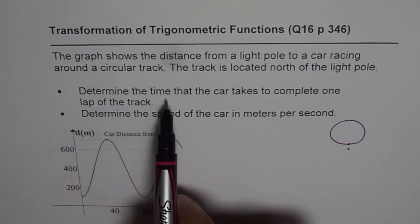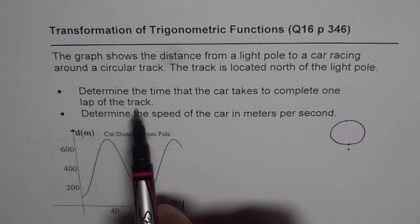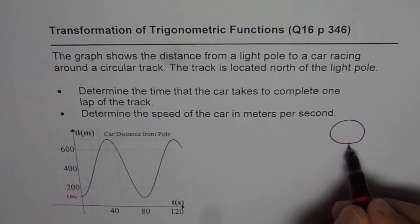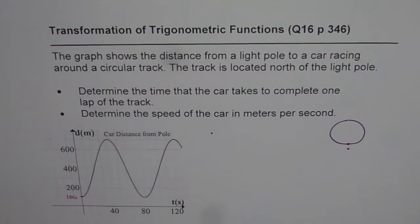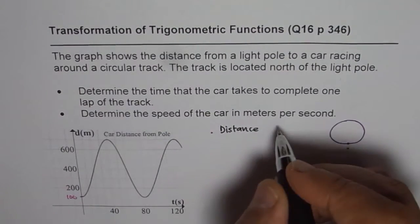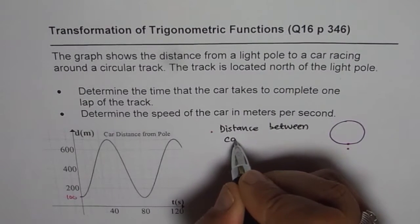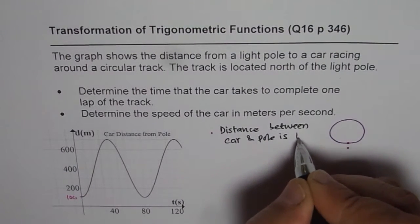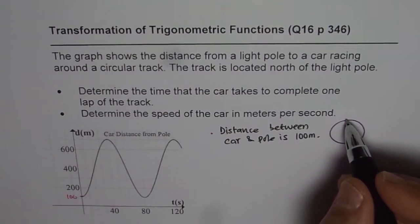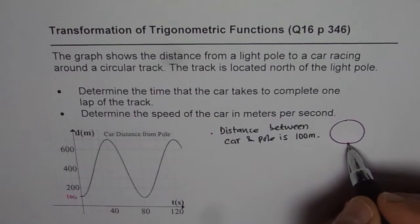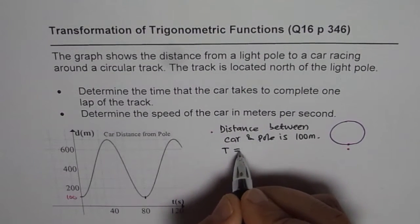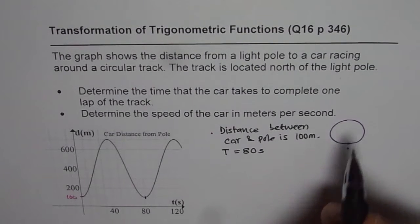Now, determine the time that the car takes to complete one lap of the track. So we start with the distance of 100 meters. That means initially the car is 100 meters away from the pole or you can say the pole is 100 meters from the car. So we can write starting distance between car and pole is 100 meters. Now, the distance increases as the car moves along and then it decreases as it comes back to the starting position. And it comes back in 80 seconds. So the time period T is 80 seconds for one complete revolution.